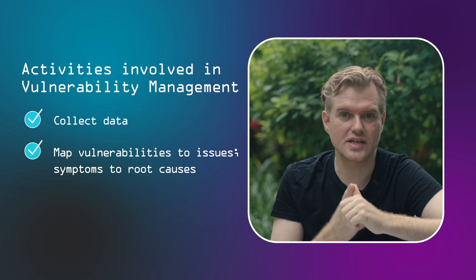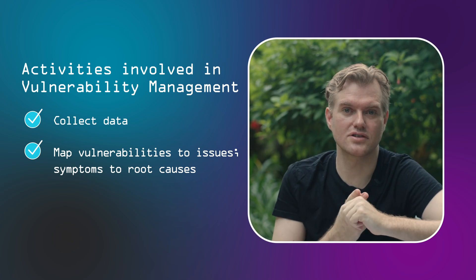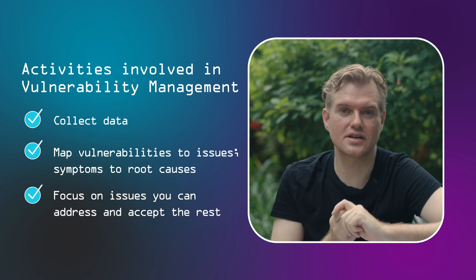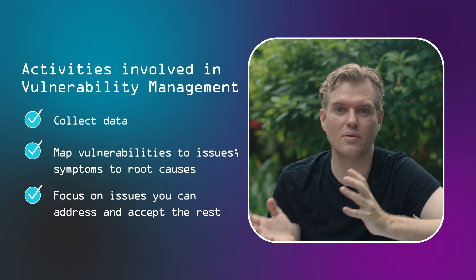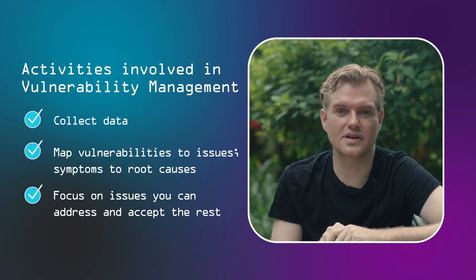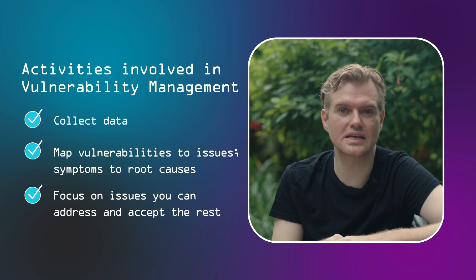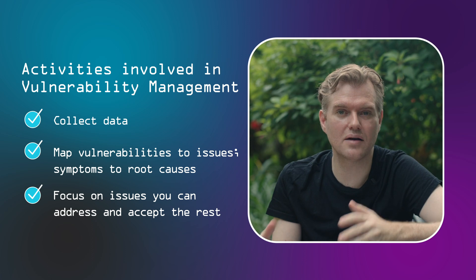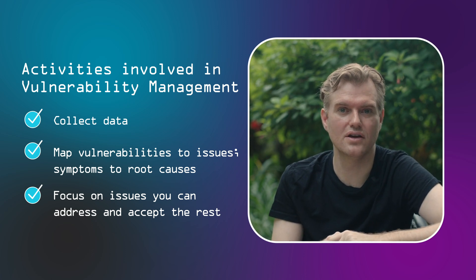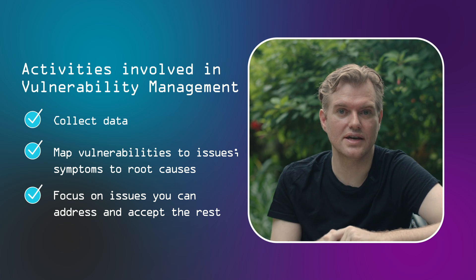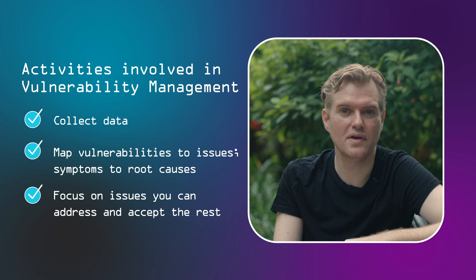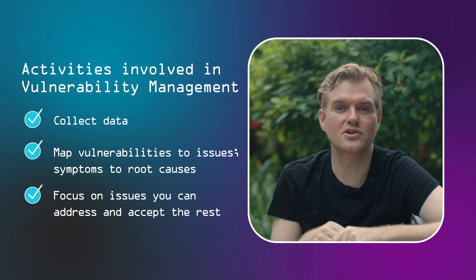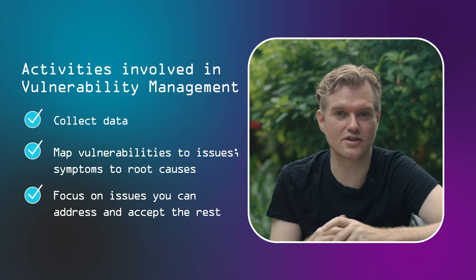There's a third step after scanning and mapping to root causes: focusing on those issues that you can reasonably address and accepting the others. Management is always around trade-off choices. If you're encountering issues that are just impossible to address right now, there's really no point making people aware of those same issues again and again within the time frame that they said they couldn't fix them anyway. So you want to look at the risk acceptance issue — the permission to leave these vulnerabilities open for a certain amount of time and only then revisit them after whatever prerequisite has been created.